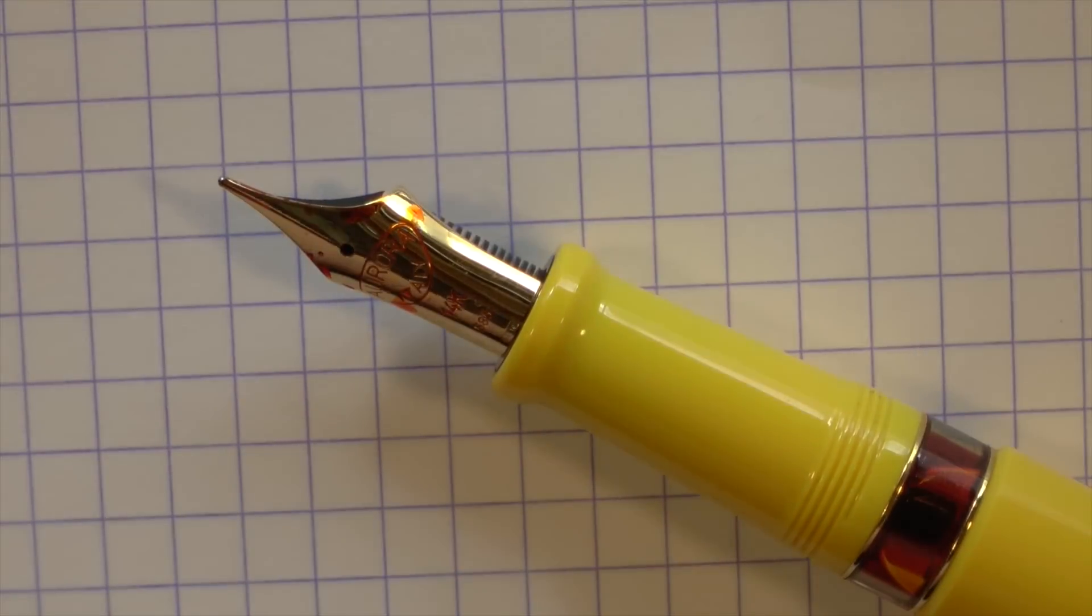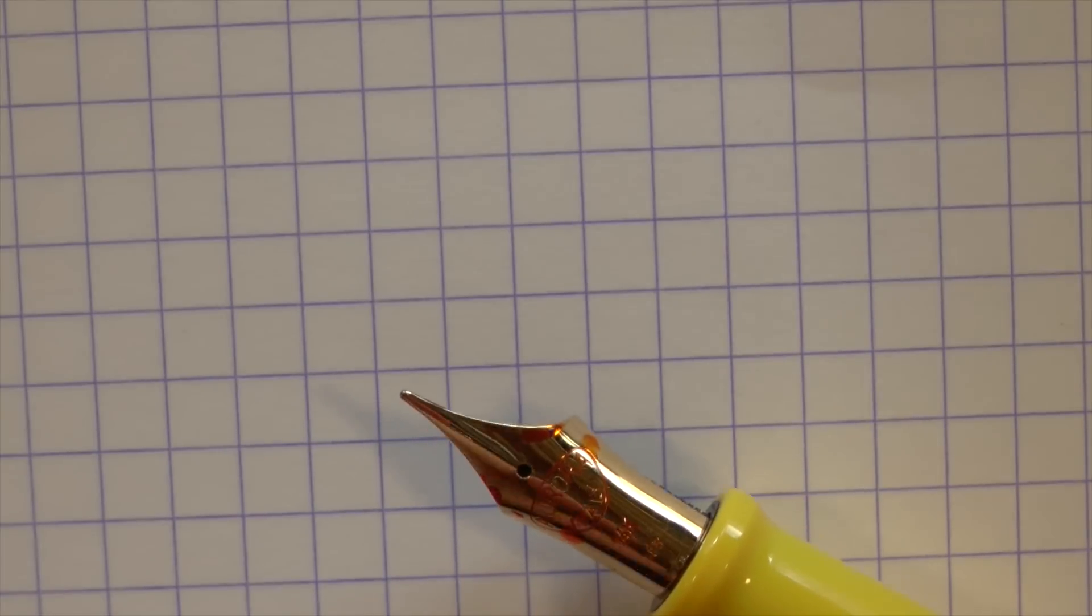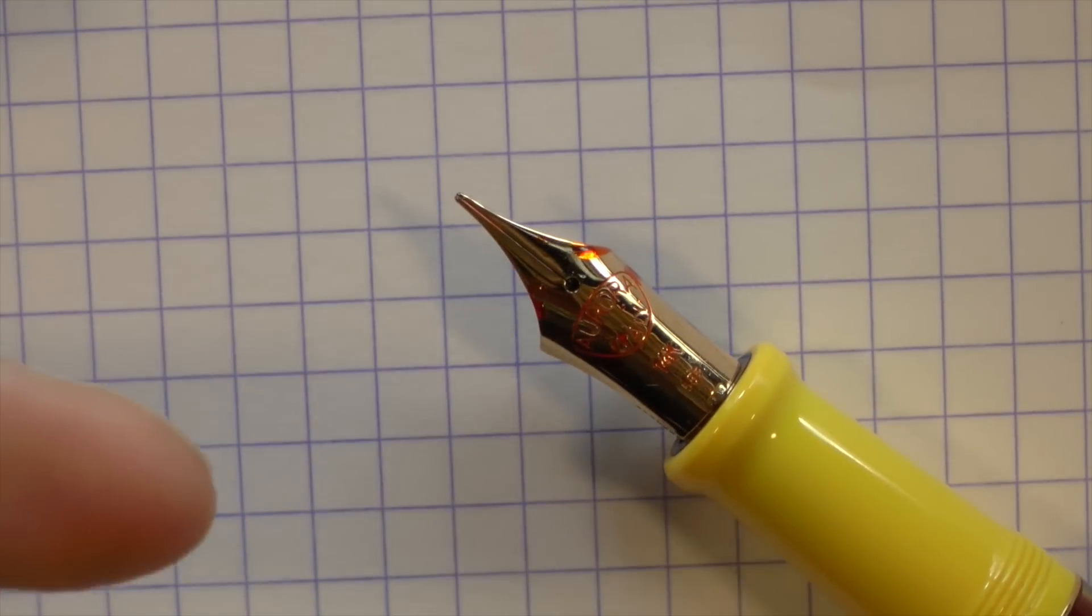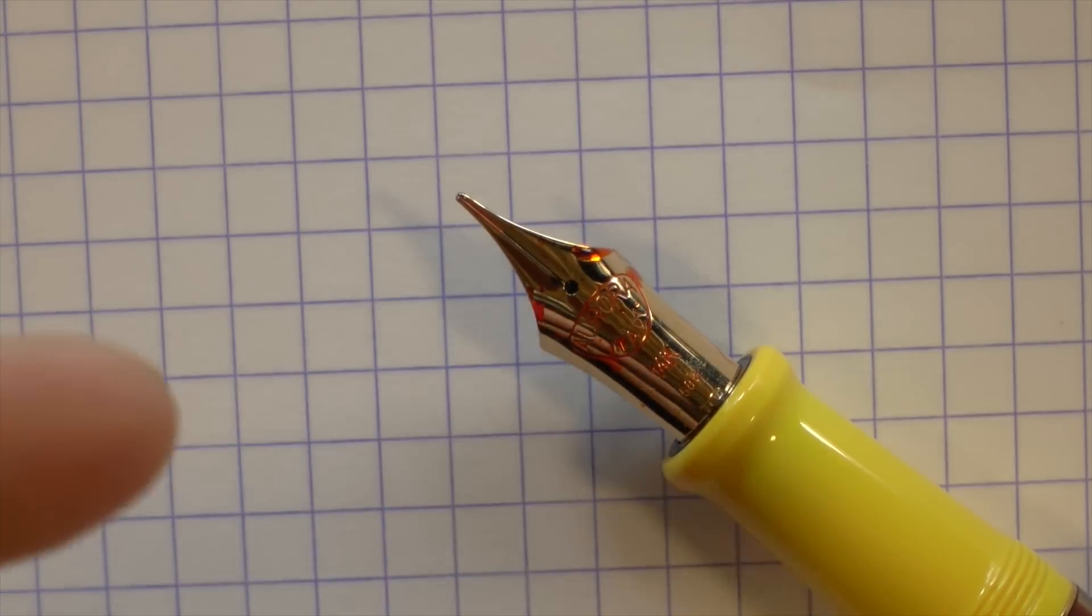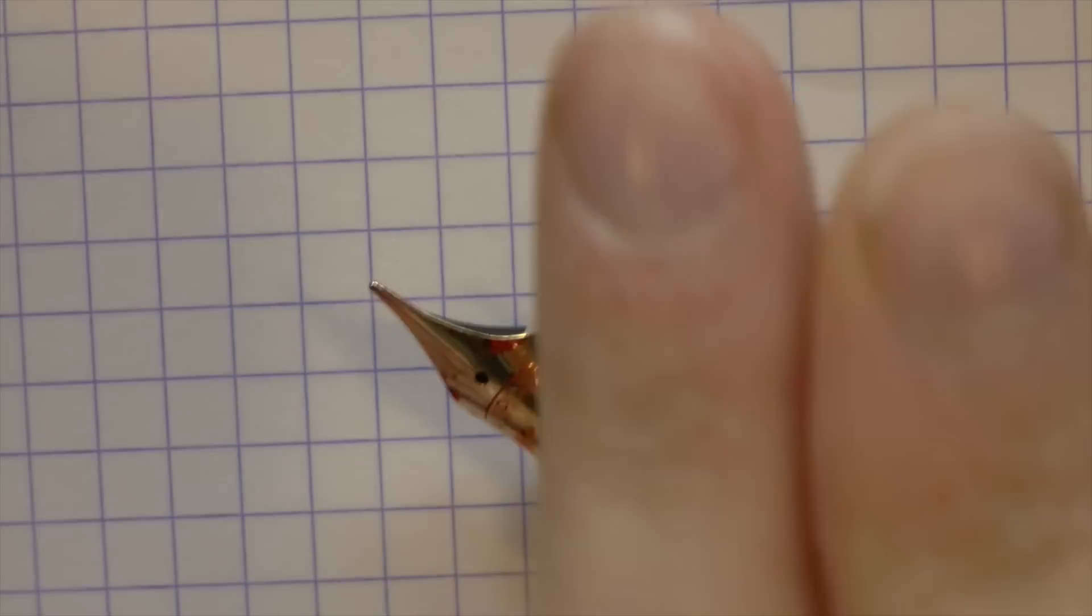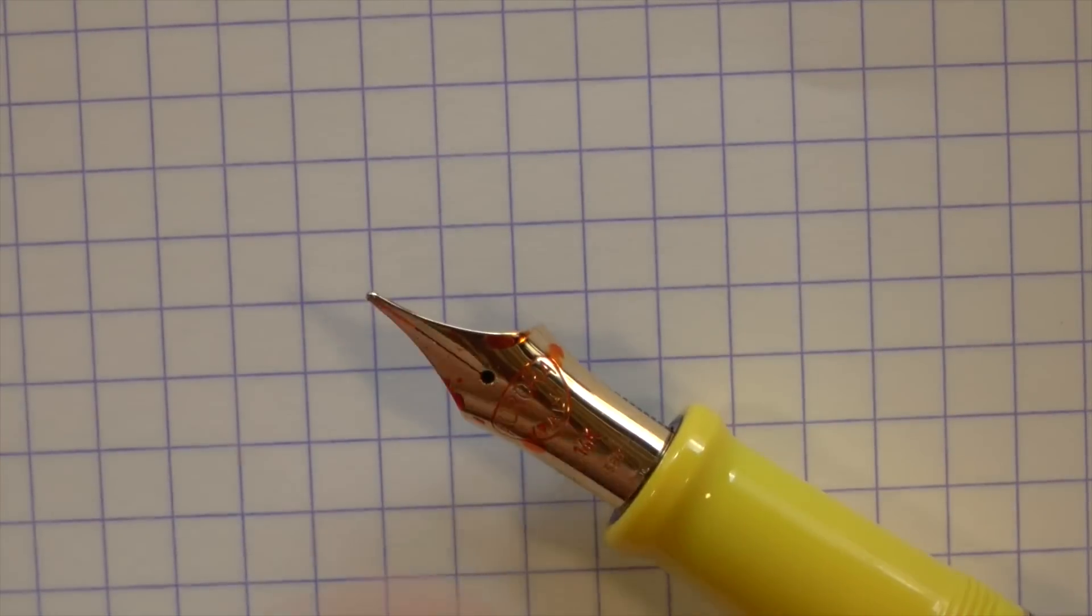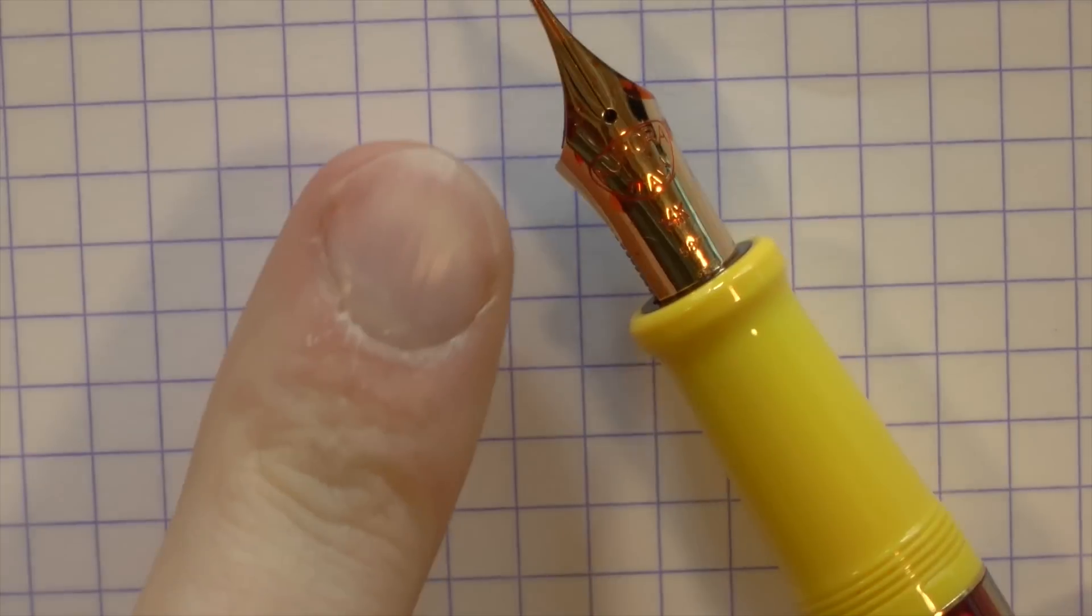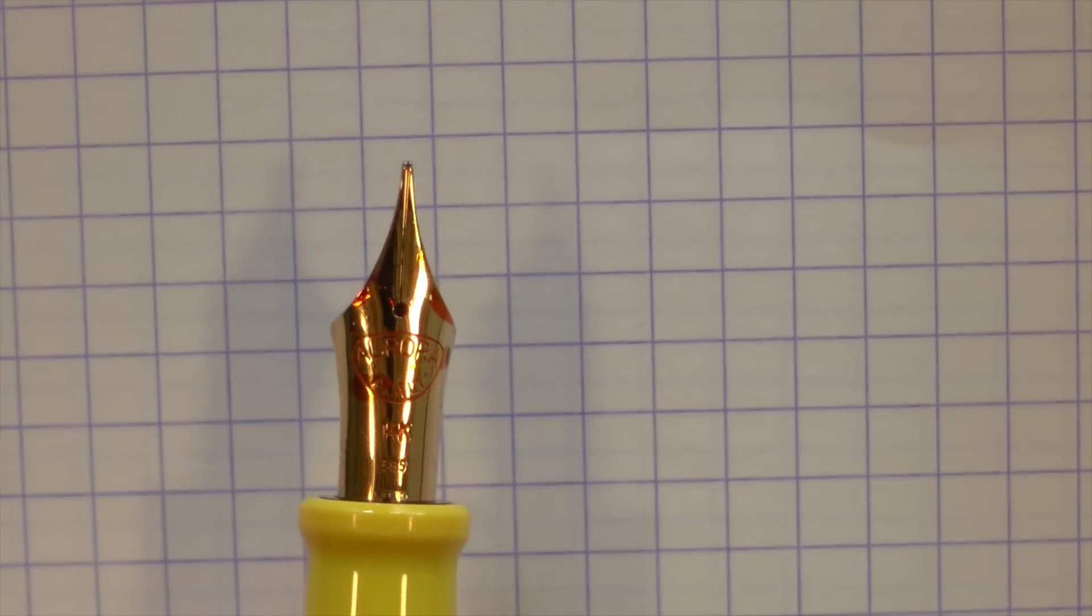Let's start with the Aurora. What Aurora has done is create a nib with very long, thin tines. And that creates flex. Right? If they're very long and very thin, they can easily spread open, more easily than if they would be a lot less thin. So, you know, that kind of makes sense to me. 14 karat nib. Solid gold nib. And also a monochrome nib. So it's a single tone, monotone nib.